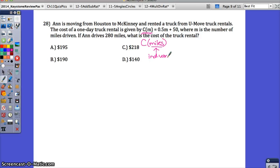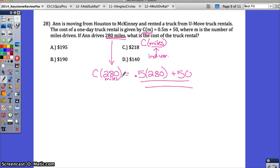If Ann drives 280 miles, what is the cost of the truck rental? Since this is the miles, you're just going to put that in for M. If you made a mistake, you might have thought this was multiplication. Remember the function notation is just read as the cost of 280 miles. This is really just a label. Put in 280 for M. All you have to do is simplify this part. 0.5 times 280, half of 280 is 140 plus the 50.